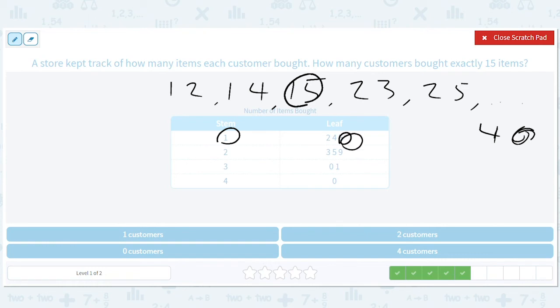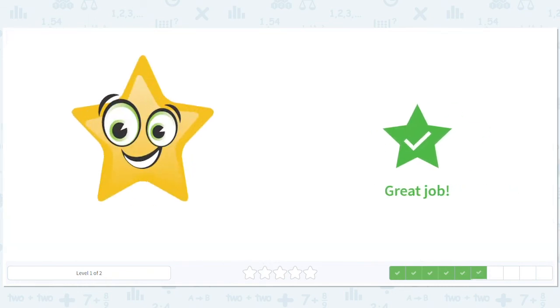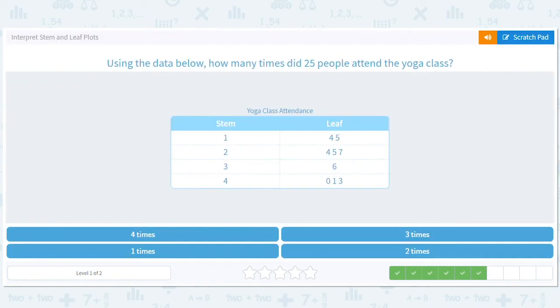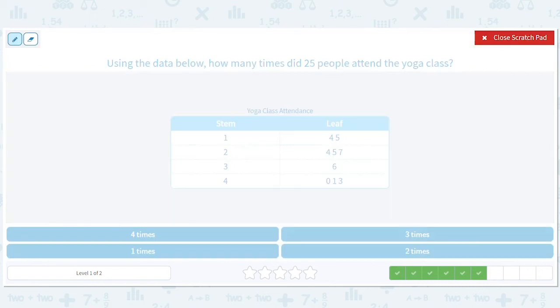You don't even really have to write out the list, you can just see how many times does five show up when the stem is one? It just shows up one time, one customer. How many times did 25 people attend? So let's do this faster. We're in this stem, we want that leaf, there's only one five leaf, right? So one time.